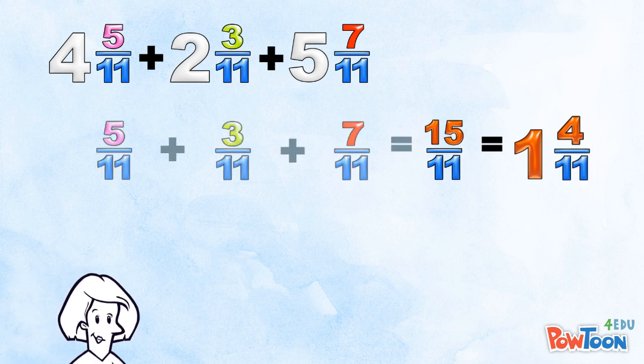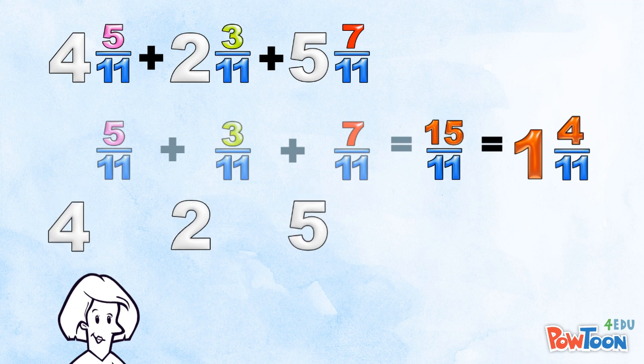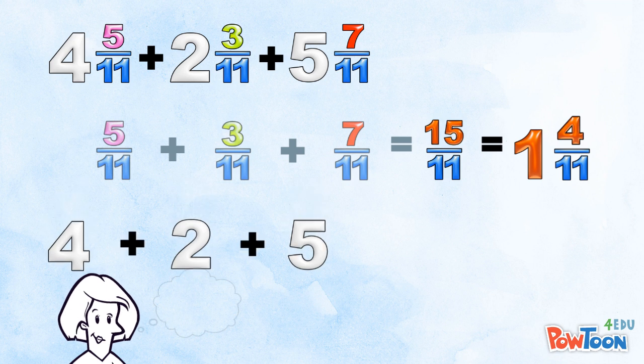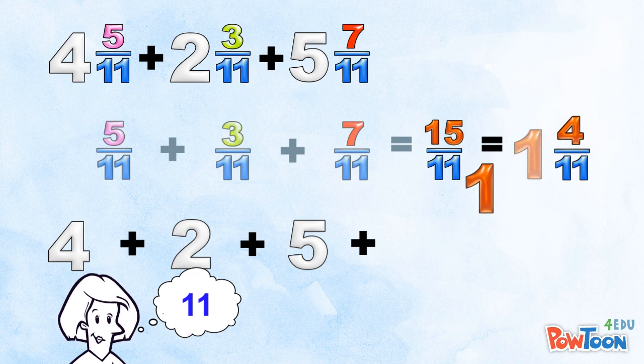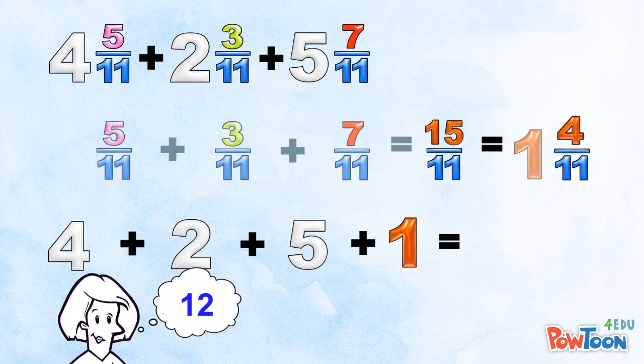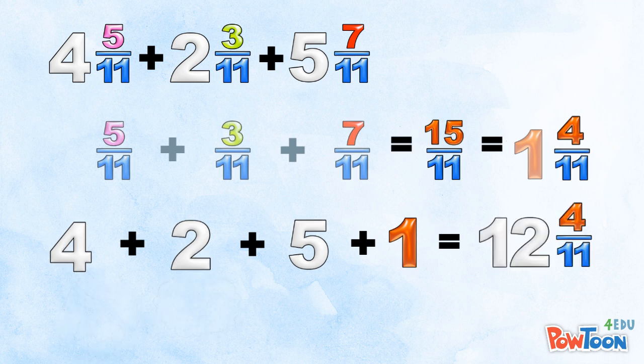Now, on the next line down, we add the whole ones together. 4 plus 2 plus 5 is 11, plus this other one from the mixed number. That's 12. Our final answer is 12 and 4 elevenths.